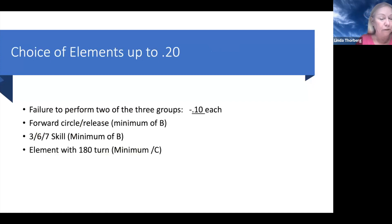So choice of elements is up to two tenths. We want to see different groups of skills, not just the same family throughout their routine. Failure to perform two of the three different groups is a minus one tenth. They need to show us a forward circle or release, minimum of B. A forward circle would be a front giant. A release would be a Jaeger or other things that circle forward. Then they could show us 367 scale, minimum of B. So that would be your clear hip, stalder, and toe-on. And then they can choose to show us an element with a 180 turn. Now, the 180 turn, minimum of C, does not have to be a pirouette. Originally, this was a pirouette. Now it's a 180 turn. So it can be a bail, could be a Ginger. It just has to be on the bar, cannot be in the mount or dismount.